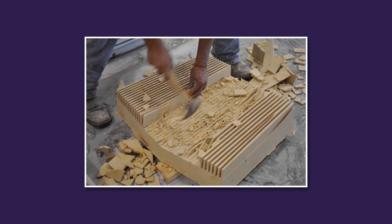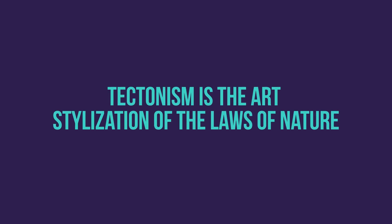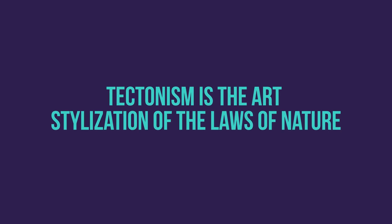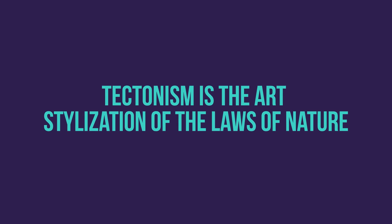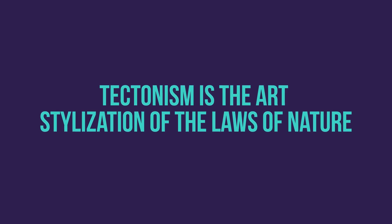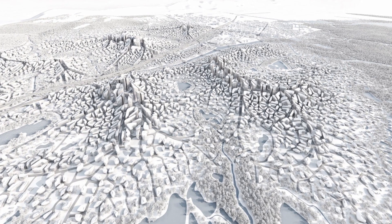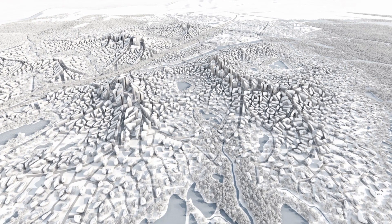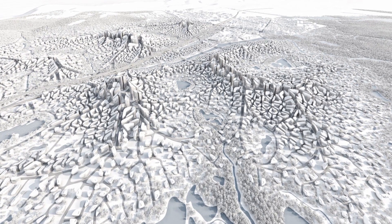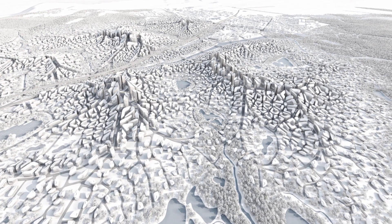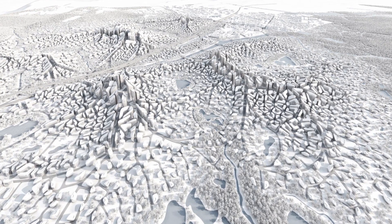So fundamentally, tectonism is derived from the same laws of nature as the previous iterations. However, the artistic stylizations of these laws can create a lot of variety for the same solution. This by itself can help us create cities that are diverse in character while similar at their core. We also have to notice that the optimization process of this style makes it light and environmentally friendly.